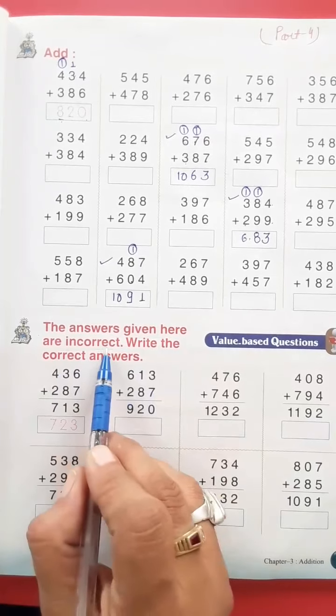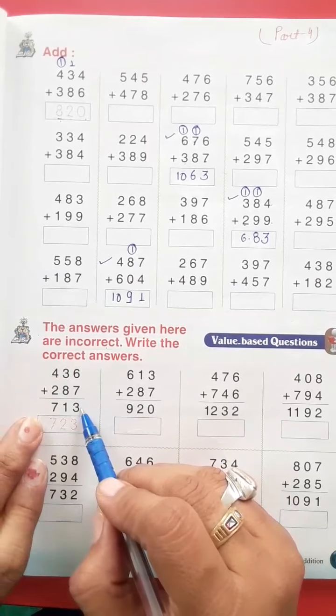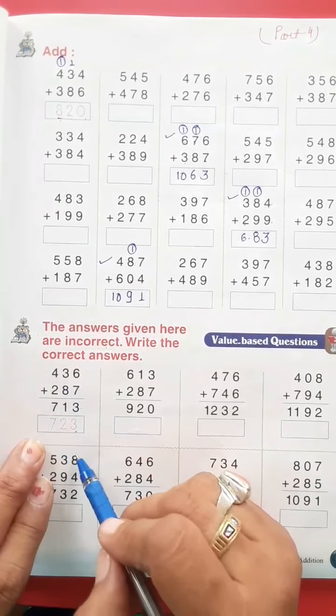Now, the answers given here are incorrect. Yahan par inka jo sum total wo galat hai. Hamko iska correct karna hai.